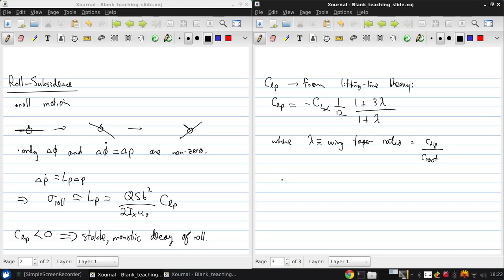And for most aircraft, the time constant that's associated with this roll damping, which is 1 over sigma roll, is generally less than 1 second. So this is a very fast mode which is always stable.